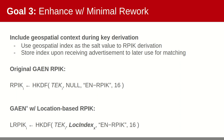Our third goal enhances GAEN with minimal rework and leaves the algorithms largely intact. I introduced TEKs and RPIs earlier, but there is a third key derived between these two called the RPIK, or rolling proximity identifier key. The RPIK is the 16-byte result of an HMAC-based key derivation function, or HKDF, which takes the daily TEK and some null bytes and a constant string. The null bytes provide a natural place for the location index provided by H3. Further, when a user captures a nearby RPI, the H3 library is queried for a location index and securely stored to later use to derive and match RPIs.